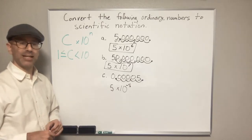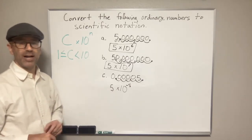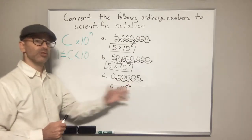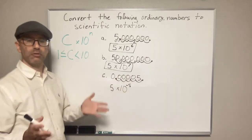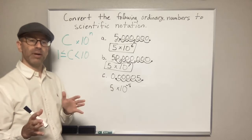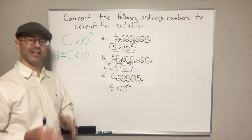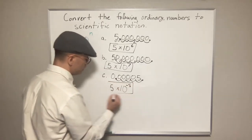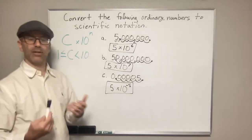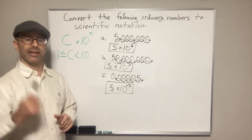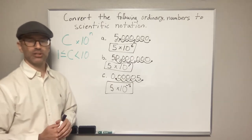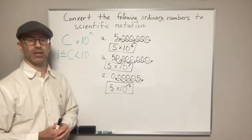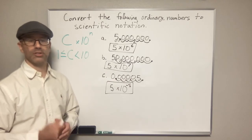Easy way to remember this: small numbers — numbers less than one — have a negative exponent. Numbers that are large, ten or larger, have a positive exponent. The number of times you move the decimal point is the exponent. If you move it five times and it's a small number, it's negative five; if it's a large number, positive five. So large numbers: positive exponent. Small numbers: negative exponent. That's how you convert standard numbers into scientific notation. If you liked this video, please like, share, and subscribe, and leave a comment if you have any questions.